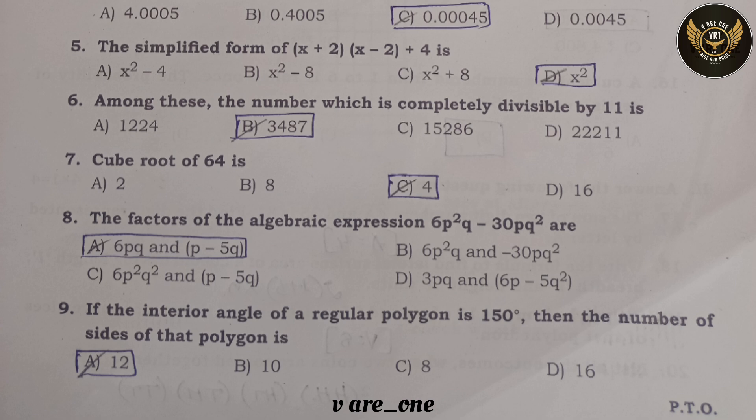Ninth question: if the interior angle of a regular polygon is 150°, then the number of sides of that polygon is option A: 12.